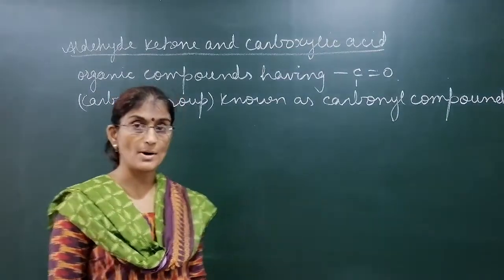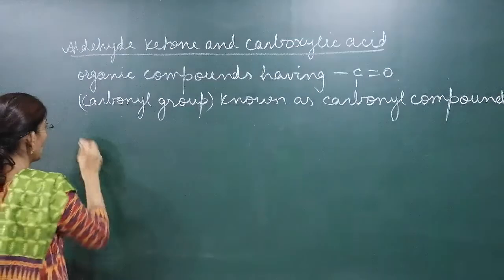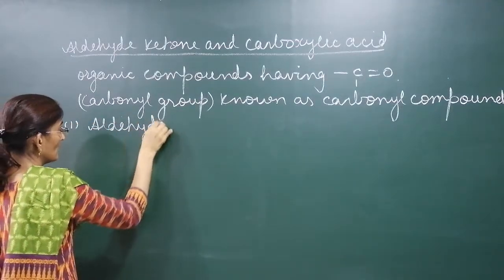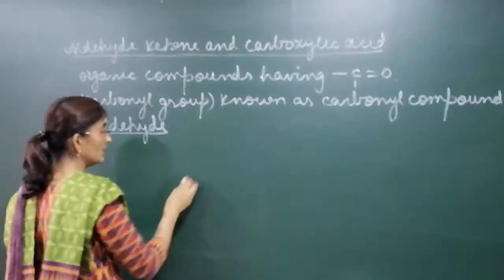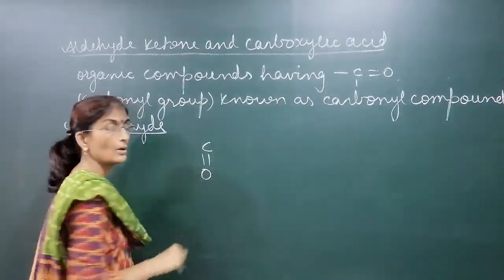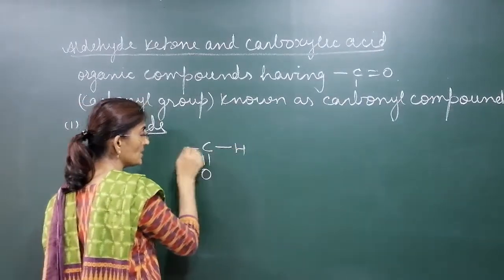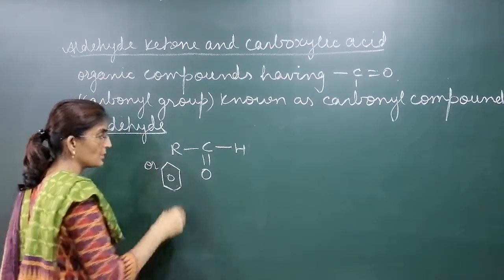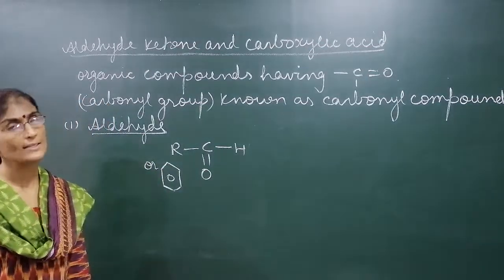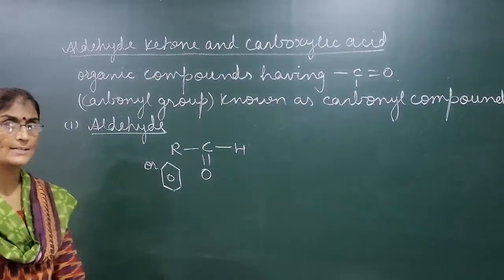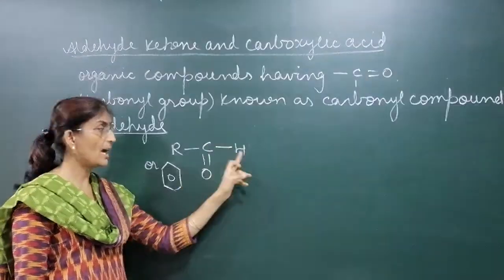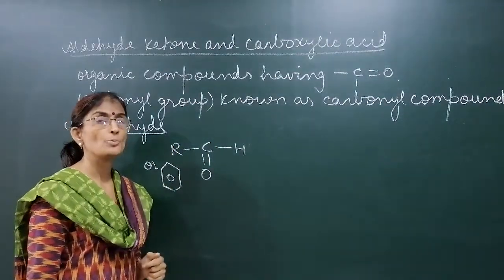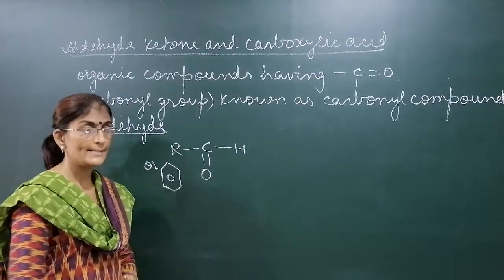Now, how many types of carbonyl compounds are there? If we classify them: first are aldehydes. What are aldehydes? They have a C=O group. One of the valencies is satisfied by hydrogen, and the other valency is satisfied by an alkyl or aryl group — then the compounds are known as aldehydes.